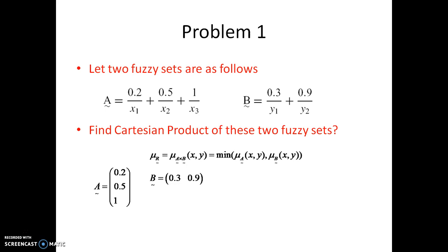Just like matrix multiplication, we need to see the row of A and the column of B. The first element (1,1) is the minimum of 0.2 and 0.3, which is 0.2. The element (1,2) is the minimum of 0.2 and 0.9, which is 0.2. For element (2,1), the second row is 0.5 and the first column is 0.3, so the minimum is 0.3. For element (2,2), the minimum of 0.5 and 0.9 is 0.5.